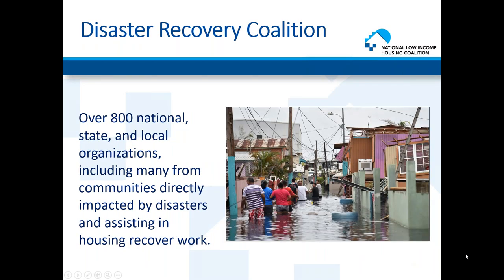NLIHC leads the Disaster Housing Recovery Coalition, comprised of more than 800 national, state, and local organizations, including many who work directly with disaster-impacted communities. The coalition works to ensure that federal disaster recovery efforts reach everyone impacted, including at-risk populations who are often hardest hit and have the fewest resources to recover. You can stay informed by reading updates in the weekly memo to members and checking the disaster housing recovery policy page on our website.